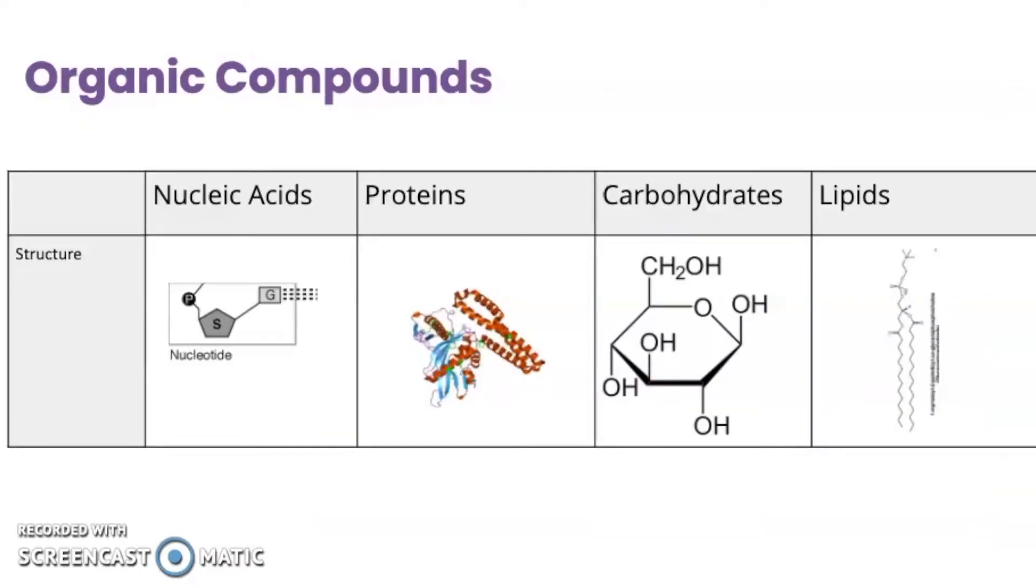So our four main categories you might have remembered from regular biology are going to be nucleic acids, proteins, carbohydrates, and lipids. When we talk about the structure of nucleic acids, we're going to break it down to a nucleotide, which we'll talk about in this video a little bit, as well as in another video on nucleic acids specifically. But these nucleotides are going to make up the structure of DNA and how we have our genetic code.